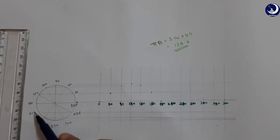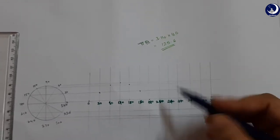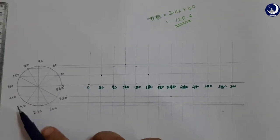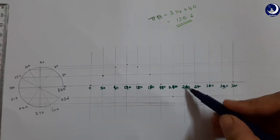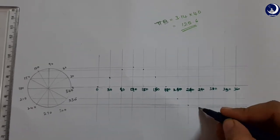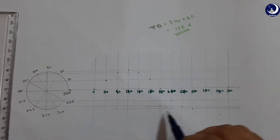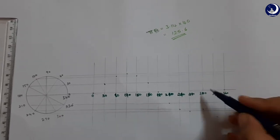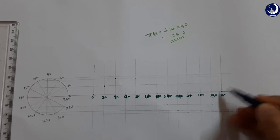So 210 is here, 210 is coming down. 240 is here. 270, 300, 330, and finally 360.